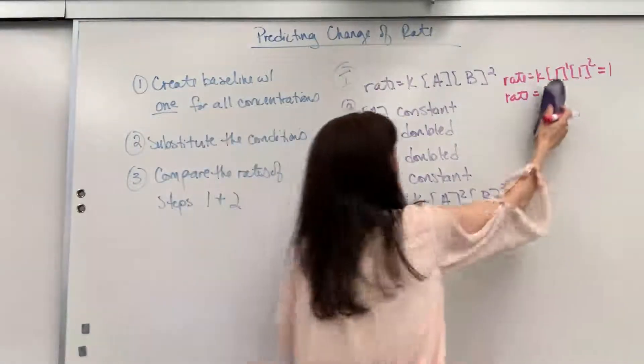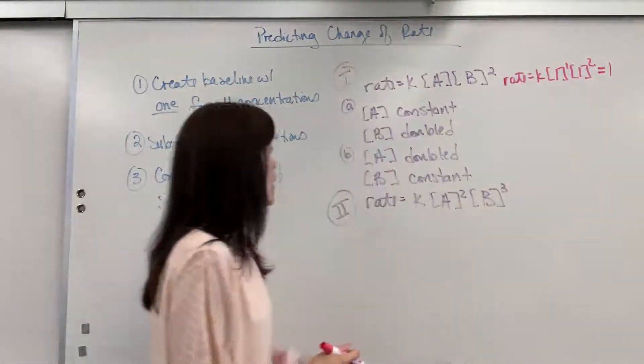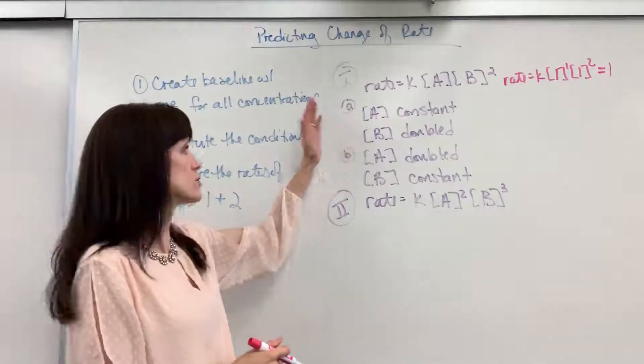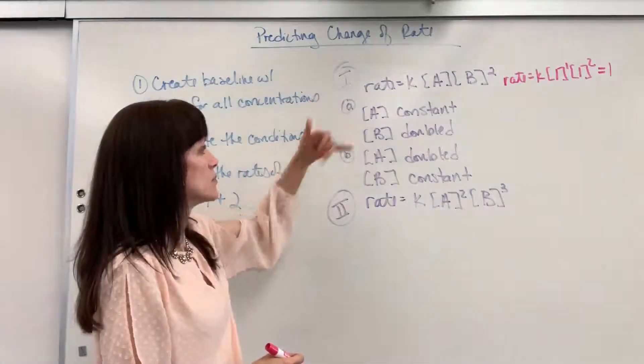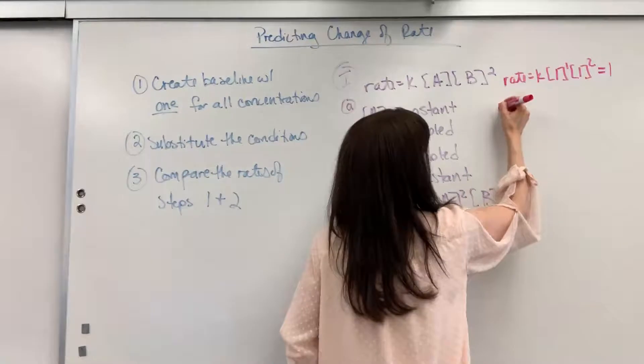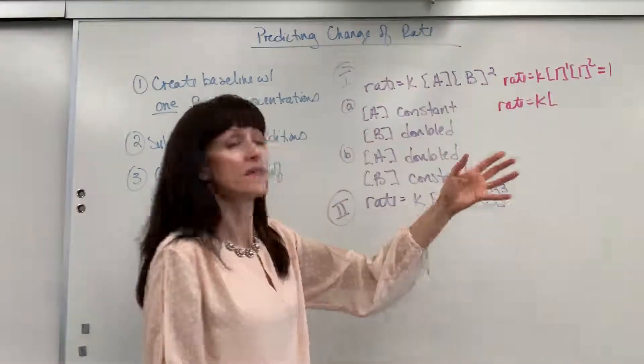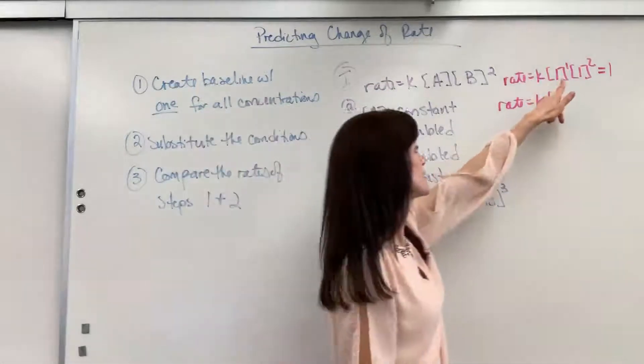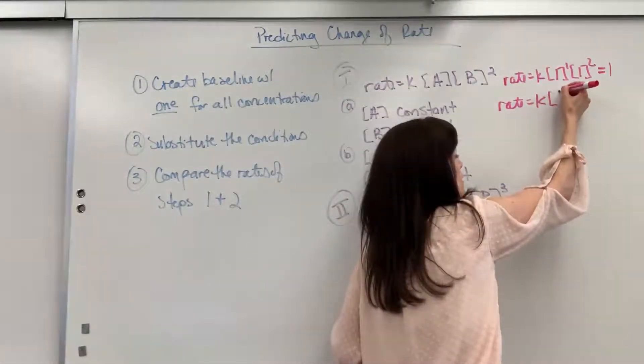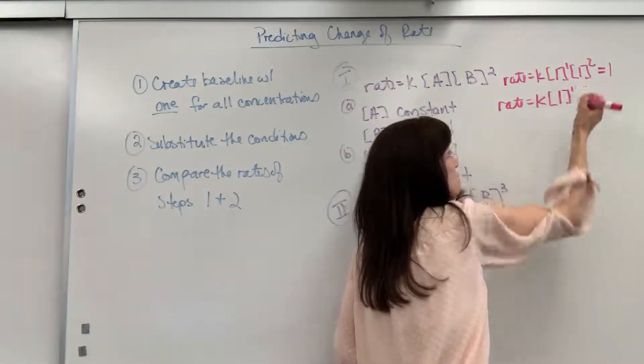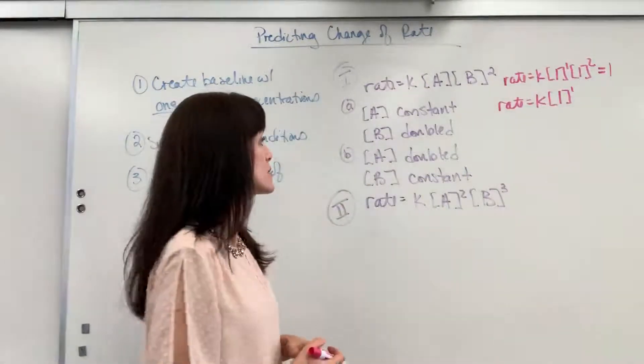Now, I'm going to substitute in our situation. The new conditions that they're giving us. They're saying A is constant, B is doubled. So let's go ahead and do that. Rate equals K. So A is constant, that means it's going to be the same. Constant from A, where it was 1, so that means A is still 1. It's going to be constant.